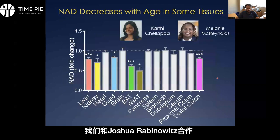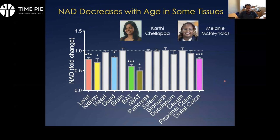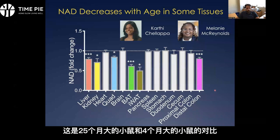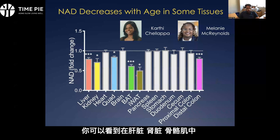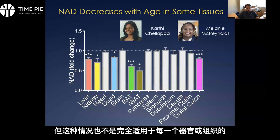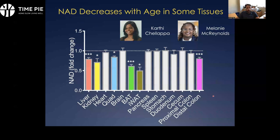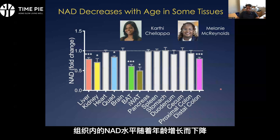We've done some work in my own lab in collaboration with Josh Pinowitz's lab to look at NAD levels across a variety of tissues. In many tissues, NAD levels do seem to fall — this is 25-month-old mice compared to four-month-old mice. You can see in liver, kidney, and skeletal muscle (the quadriceps), we see decreases in NAD. It's not universal — in our hands it's not so clear that it falls very much in the pancreas, spleen, or stomach. But we definitely see a decline in NAD levels in many tissues with age in mice.